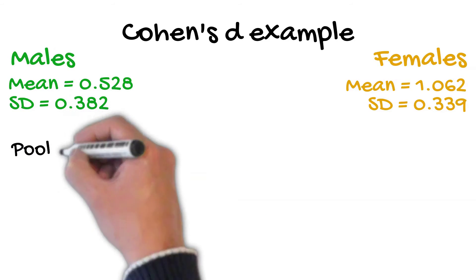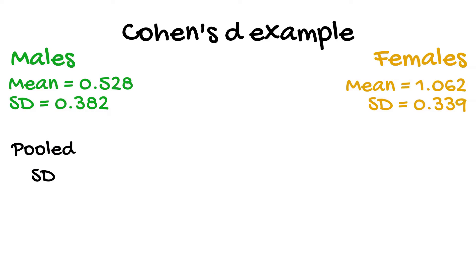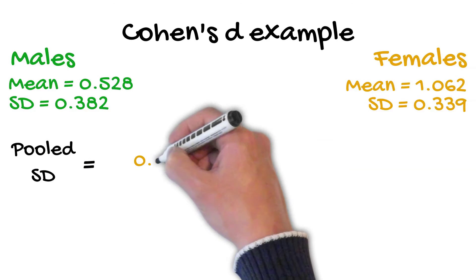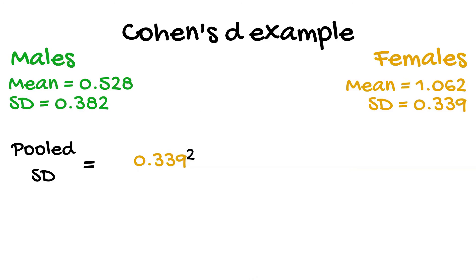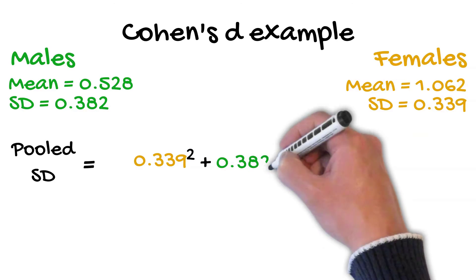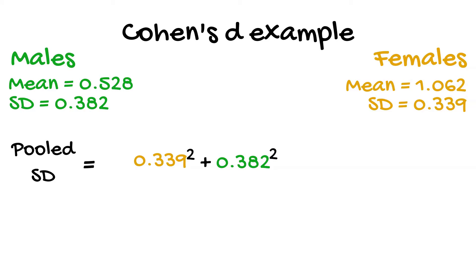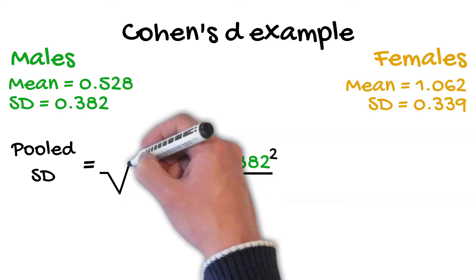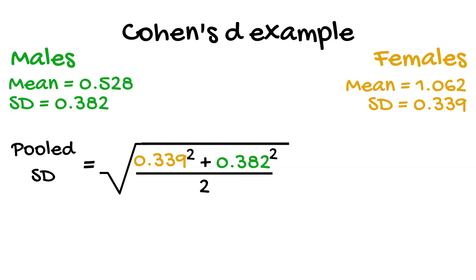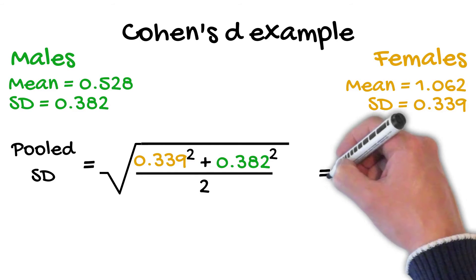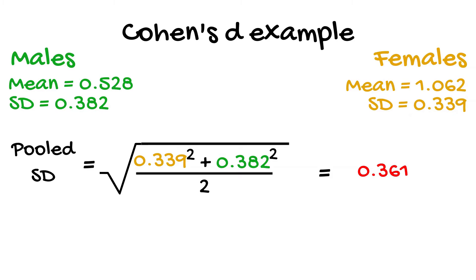Let's first calculate the pooled standard deviation. So, the pooled standard deviation would be 0.339 squared plus 0.382 squared divided by 2, and then you take the square root of that number. Doing so gives a pooled standard deviation of 0.361.